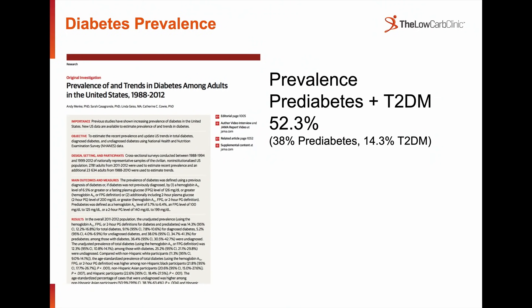2012 American data that did include HbA1c showed a 52% prevalence of pre-diabetes and type 2 diabetes combined in the adult population — over half. That's most likely something similar in Australia. If you include people who have insulin resistance but can still control their glucose, we're probably talking something like 85 to 90% of the population with this insulin resistance problem. It's pretty extraordinary to think that maybe only 10 to 15% of the population are actually healthy.